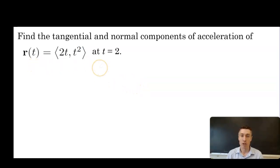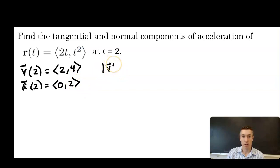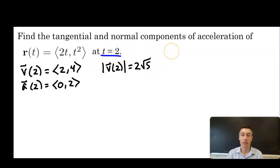This is the same vector function as before, so we jump right in. The velocity vector at 2 was ⟨2, 4⟩, the acceleration vector at 2 was ⟨0, 2⟩, and the magnitude of the velocity vector was 2√5. Being asked at t = 2 means once we're done differentiating, the rest is not calculus — finding a dot product, cross product, or magnitude is not a calculus operation.